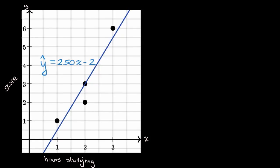We are interested in studying the relationship between the amount that folks study for a test and their score on a test, where the score is between zero and six. We're going to look at the people who took the tests and plot for each person the amount that they studied and their score. For example, this data point is someone who studied an hour and they got a one on the test.